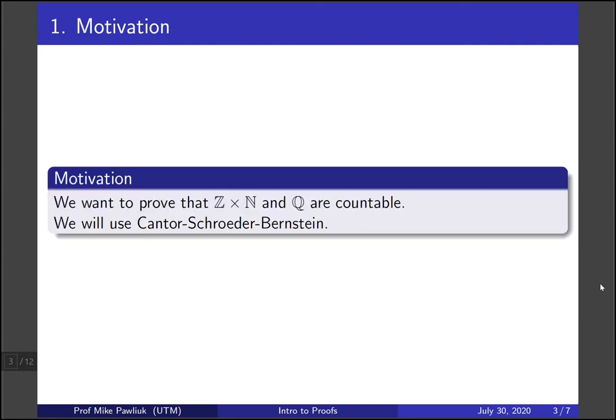Our motivation is that we want to prove that the integers cross the naturals and the rationals are countable sets. That's the big idea for today. We're going to use the Cantor-Schroeder-Bernstein theorem to do this. There are other ways of doing this without it.